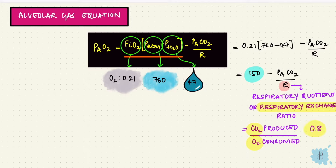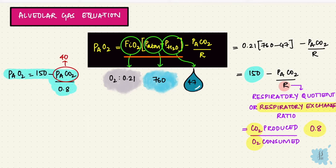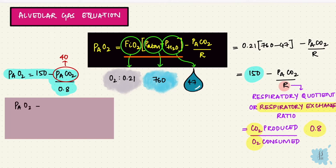So alveolar oxygen equals 150 minus alveolar carbon dioxide over 0.8. Normally alveolar carbon dioxide is 40 mmHg. Putting that into the equation: 150 minus 40 over 0.8, which gives 100 mmHg. So at an alveolar carbon dioxide of 40 mmHg, the alveolar oxygen is 100 mmHg.